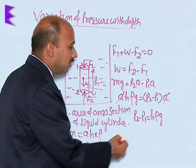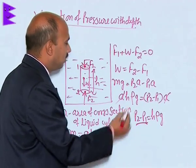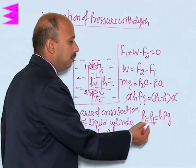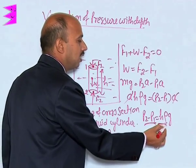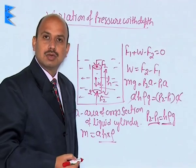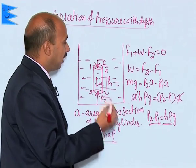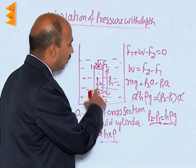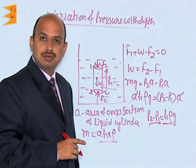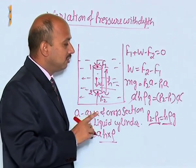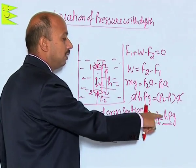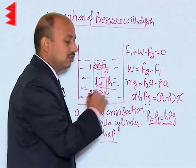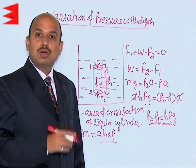This means the pressure difference between points 1 and 2 depends on the height of the liquid column. It does not depend on the area of the cylinder taken — only on the height of the liquid column, the density of the liquid, and the acceleration due to gravity.